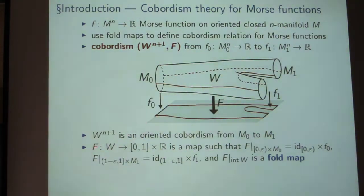And big F is supposed to be a map from W basically to the plane, such that the behavior near the boundaries is as follows. If you restrict F to a tubular neighborhood of m0 within W, then it should be the product of the identity on the interval with the Morse function f0. And on the other side, in a similar way, the restriction of F to a tubular neighborhood of m1 in W is also of this form. It's a product of the identity with the Morse function f1. And the main property is now that we also require the restriction of F to the interior of W to be a fold map.